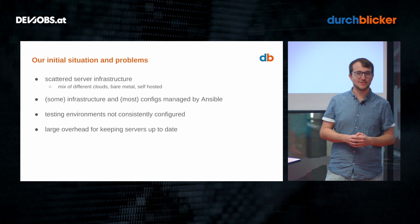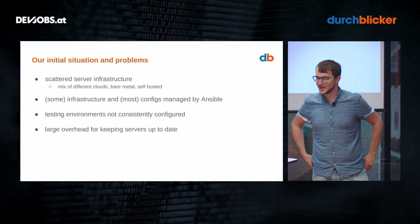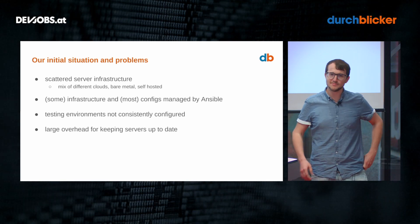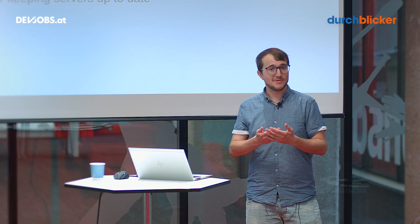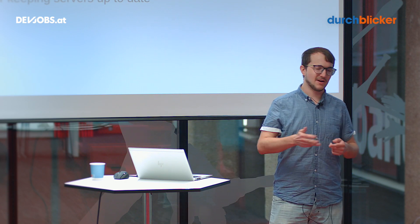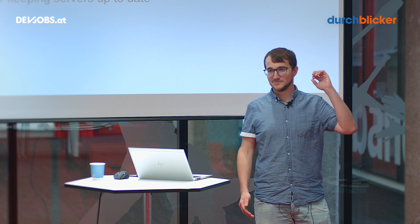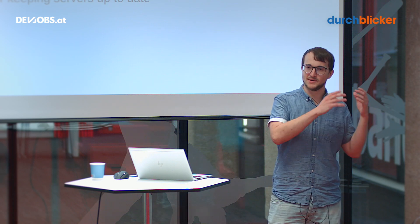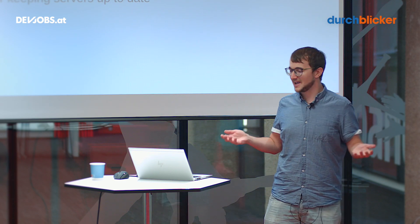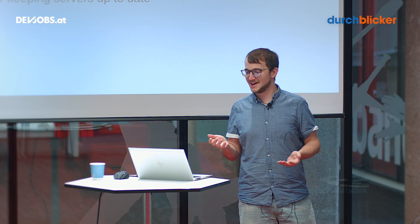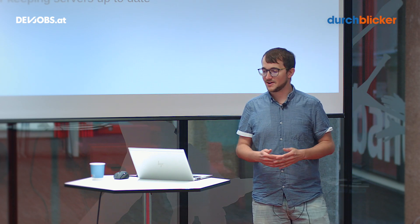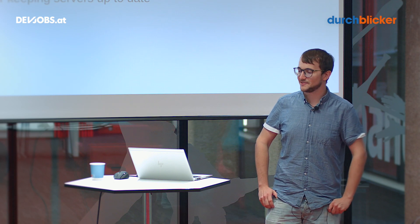So what was our initial situation? What were our initial problems that we were about to tackle? We had a very scattered server infrastructure — a mix of different clouds. Every cloud you could imagine: we were in AWS, GCP, DigitalOcean, Azure, Hetzner. We even had a bare-bones server in our company building. You can imagine this gets a bit messy, but I think many scale-ups are in a similar situation because you add servers here and there and the configuration gets messy.